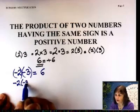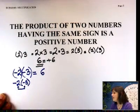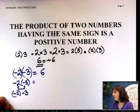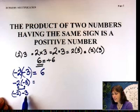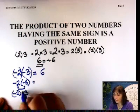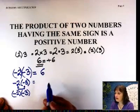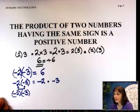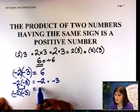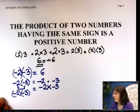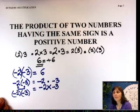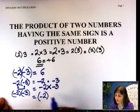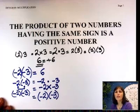I can write negative 2, negative 3 separated by parentheses — that is fine. Can I write it as negative 2 with parentheses around negative 3? No — that's subtracting 3. So if you mean multiplication, make sure you put parentheses around it. Another way is negative 2 dot negative 3, but that's a little dangerous if somebody doesn't see the dot. The cleanest way is to put parentheses around both, so you know you're multiplying two negative numbers.